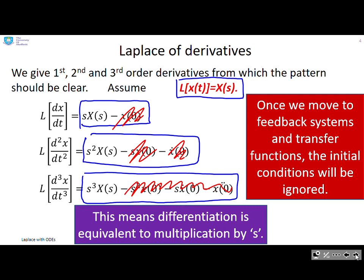Therefore, what you'll see is that differentiation becomes equivalent to multiplication by s. So my original transform was x(s). If I differentiate, I get s·x(s). If I differentiate twice, I get s². If I differentiate three times, I get s³ and so on.